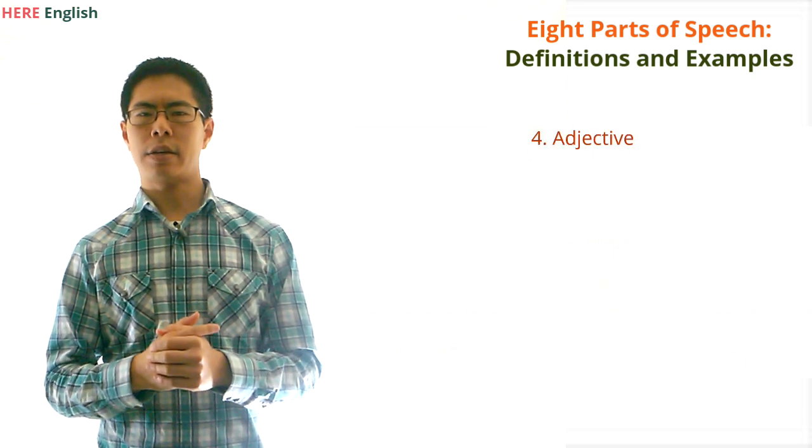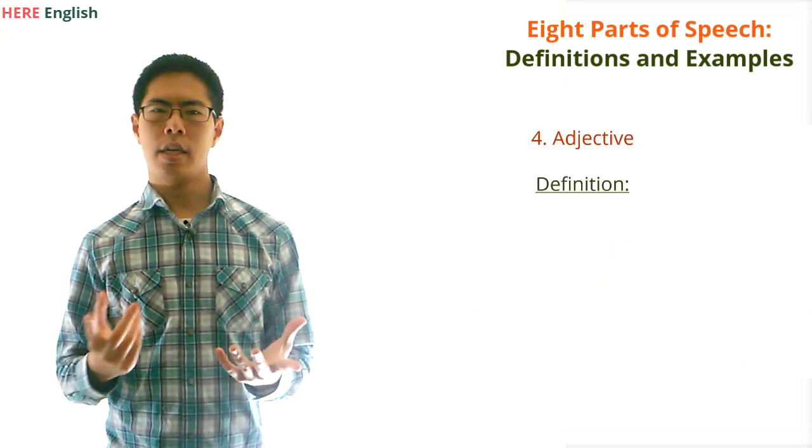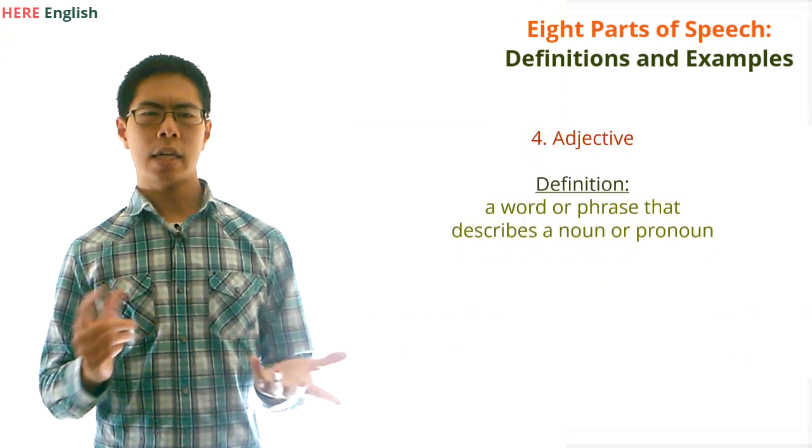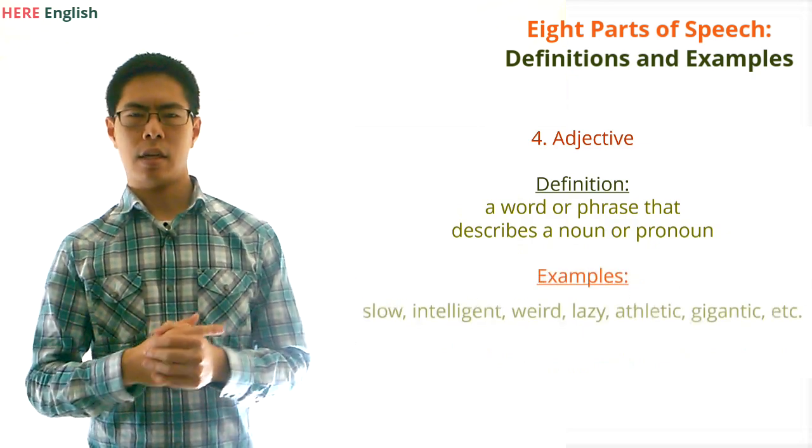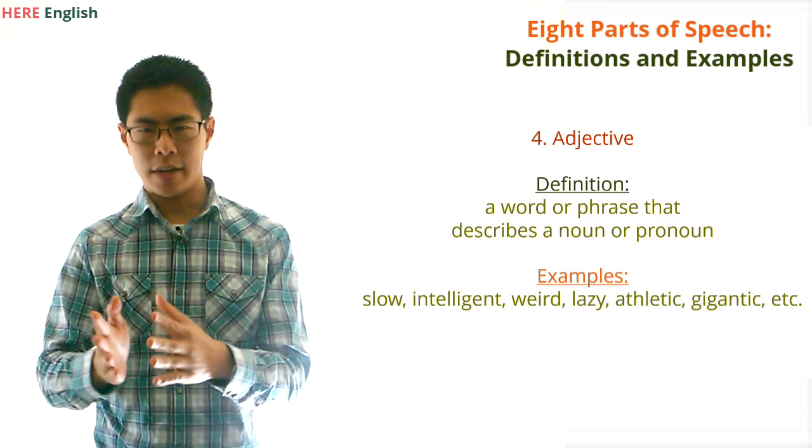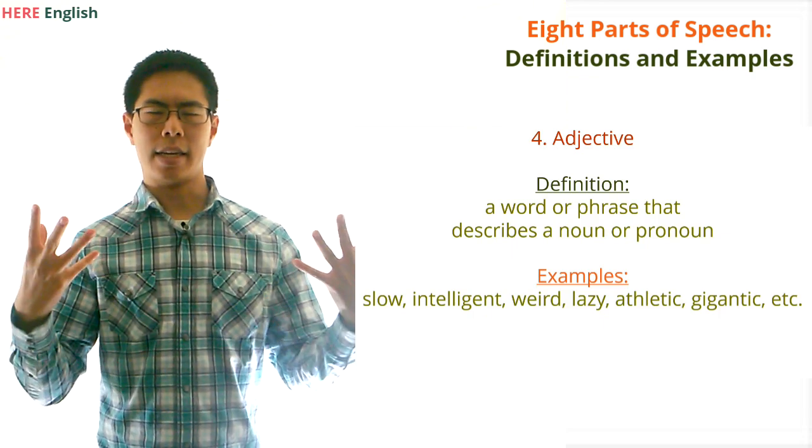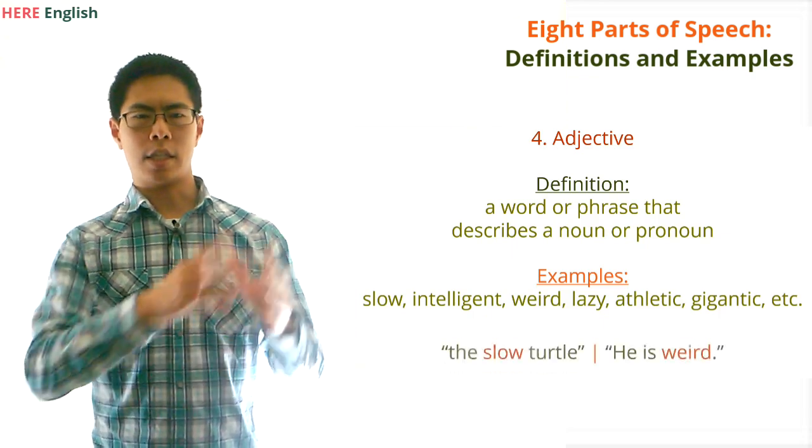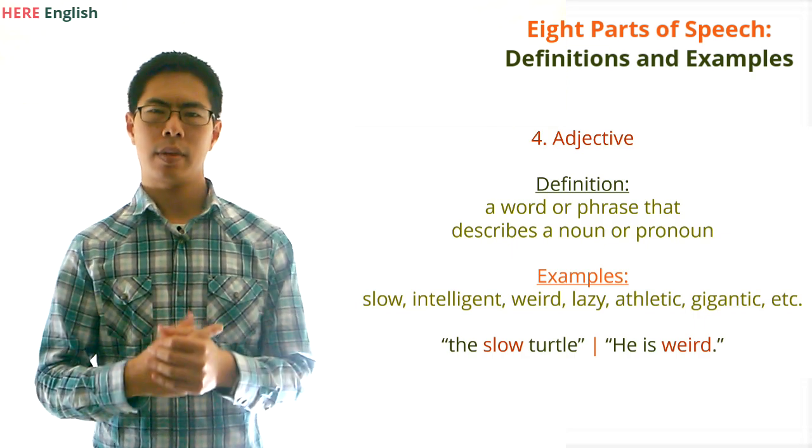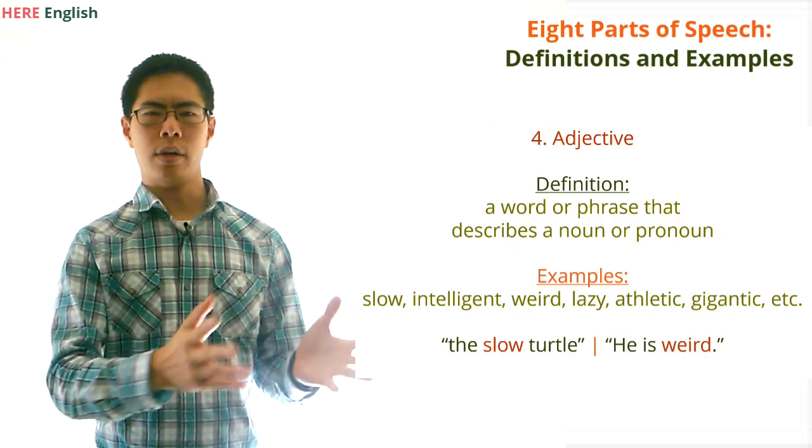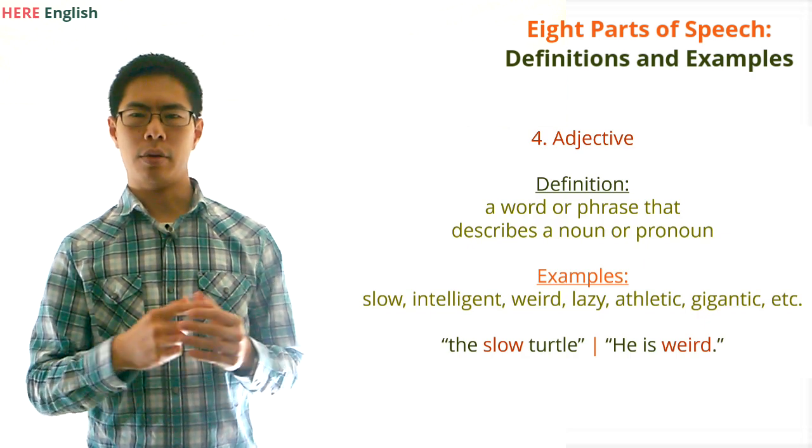Next, let's move on to adjectives. What is an adjective? An adjective is a word or phrase that describes a noun or a pronoun. Here are some examples of adjectives: slow, intelligent, weird, lazy, athletic, gigantic, etc. If we said the slow turtle, the word slow is describing the noun turtle. If we said he is weird, the word weird is describing the pronoun he.